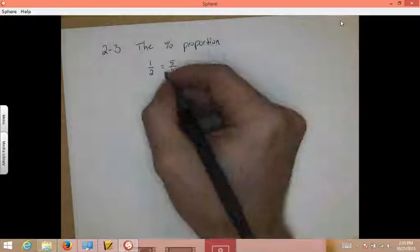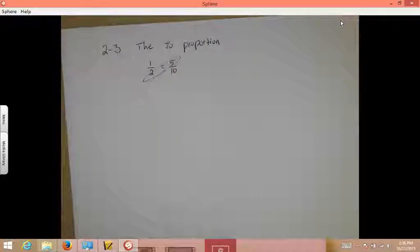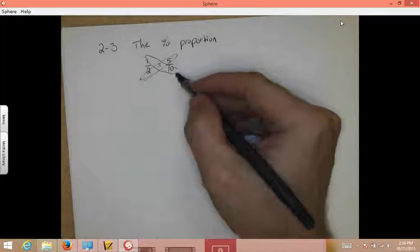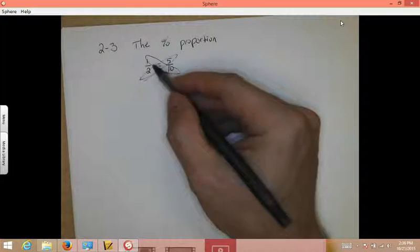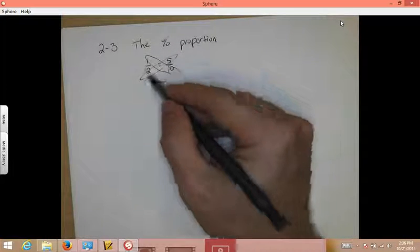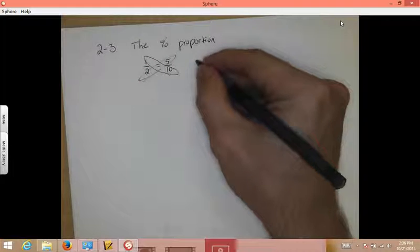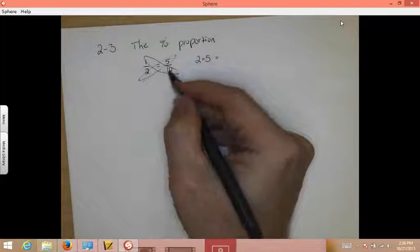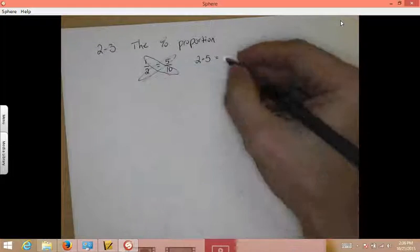And the cool thing about proportions is remember cross products are equal. Now remember product, in case you forgot, a product is the answer to a multiplication question. So when I say cross products, the products of the numbers cross, meaning diagonal. So in this loop right here, I have 2 and 5. So 2 times 5 should equal, and in this loop, 1 times 10.